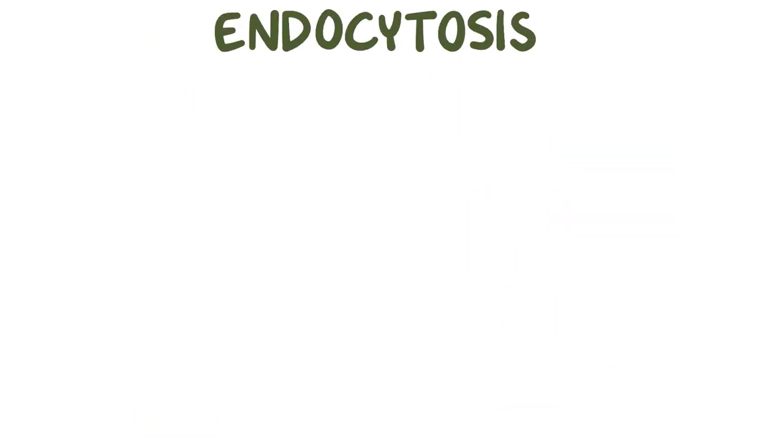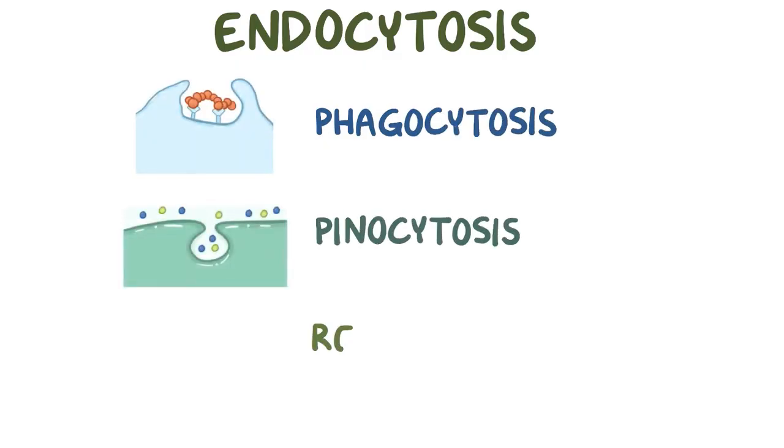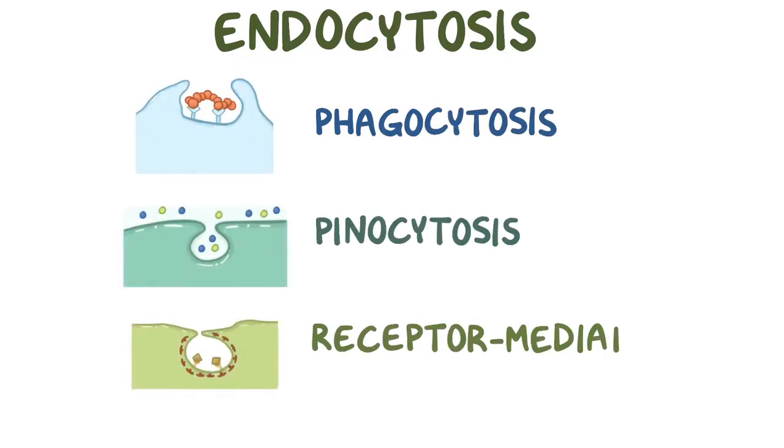There are three types of endocytosis: phagocytosis, pinocytosis, and receptor-mediated endocytosis.